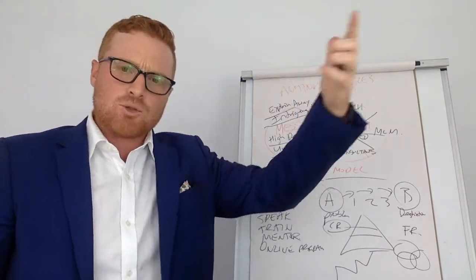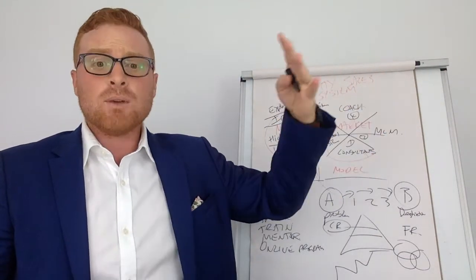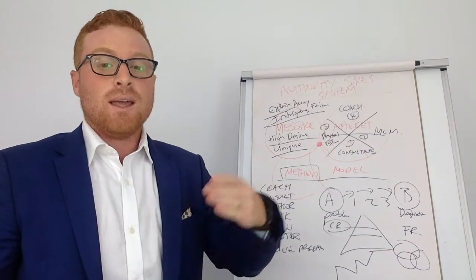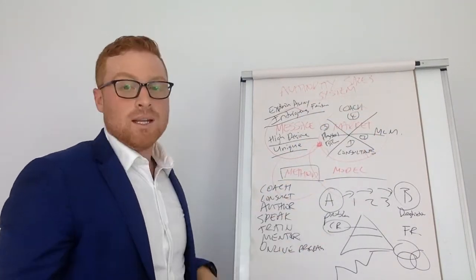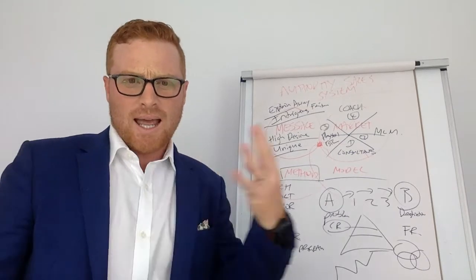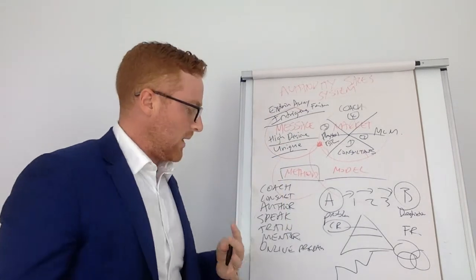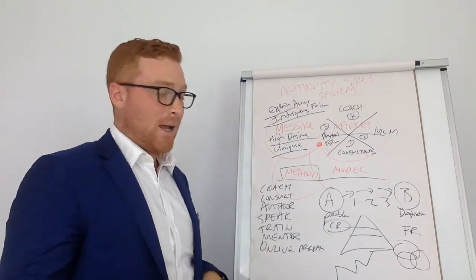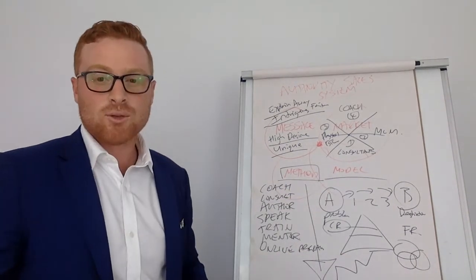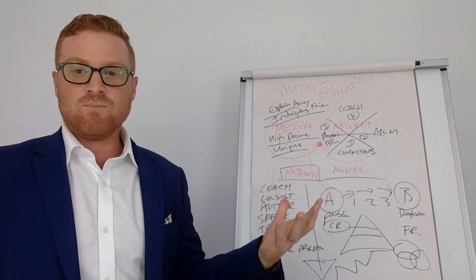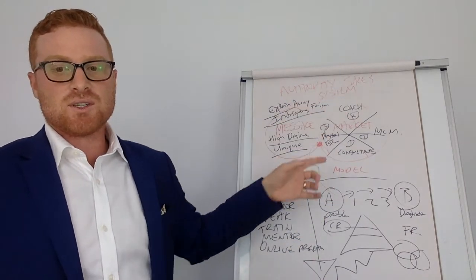Next is I can train. So I can run training. I can say, hey, come to a live event. We do live events all the time. Come to one. I'm going to take you through this model. And in three days or four days or two days, it will be done. You can mentor. So I can mentor you one-on-one. Or I can create an online program. Now, I have every single one of these. I've gone right through all of them. And I have the method. So this is the authority sales system.